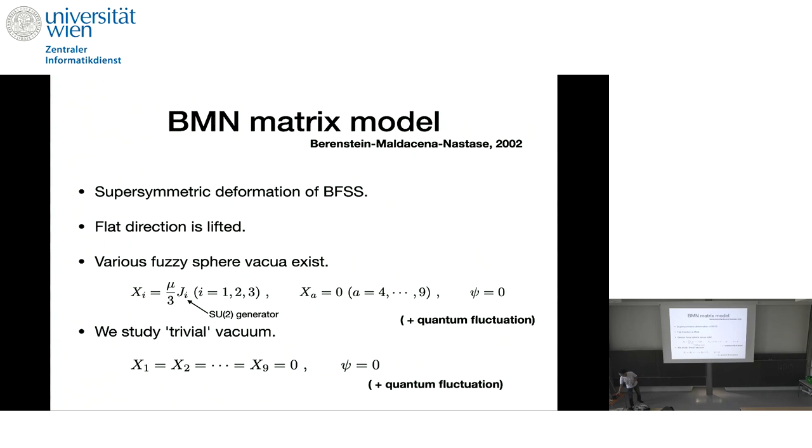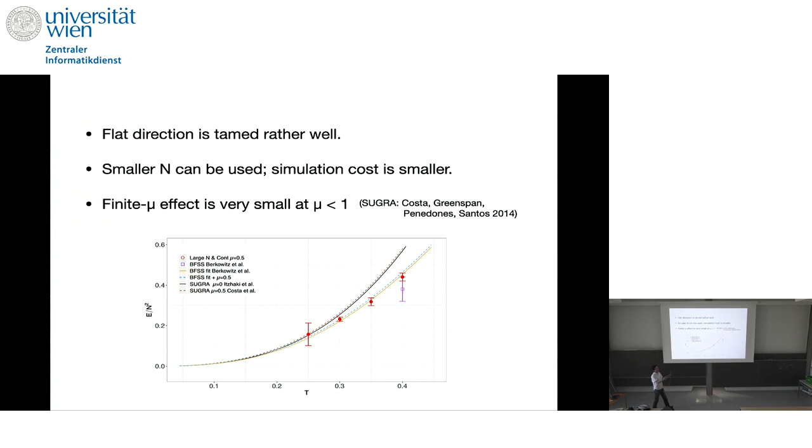And although it lifts the flat direction, and although it introduces, you know, a non-trivial vacuum, this lift, that effect of lifting flat direction is really big enough so that this trivial vacuum becomes very stable. And without going to N equals 16 or 32, already at N equals to 8, even at very low temperature region, we could see very stable simulation. We didn't have to go to very large N just to stabilize the simulation.